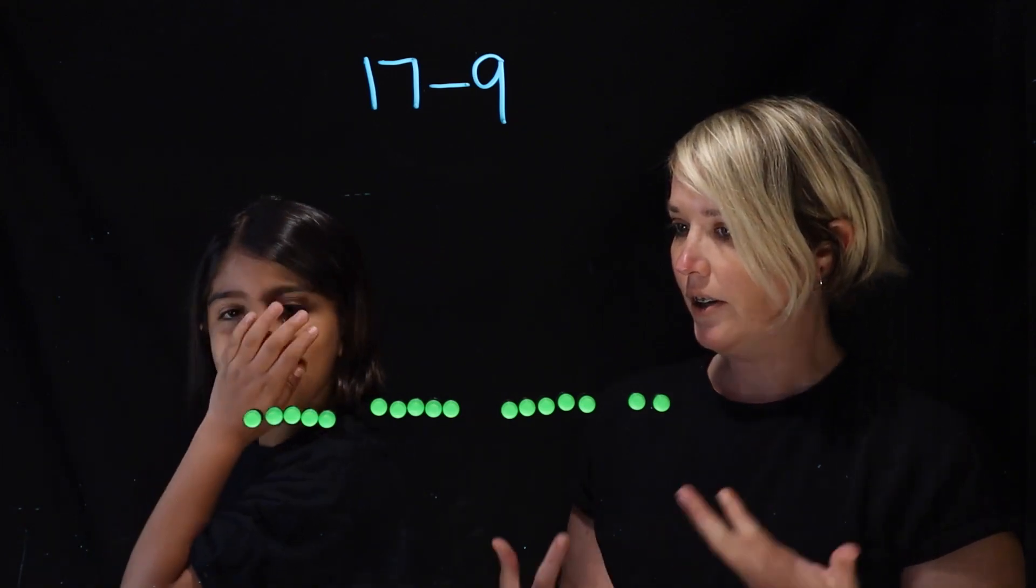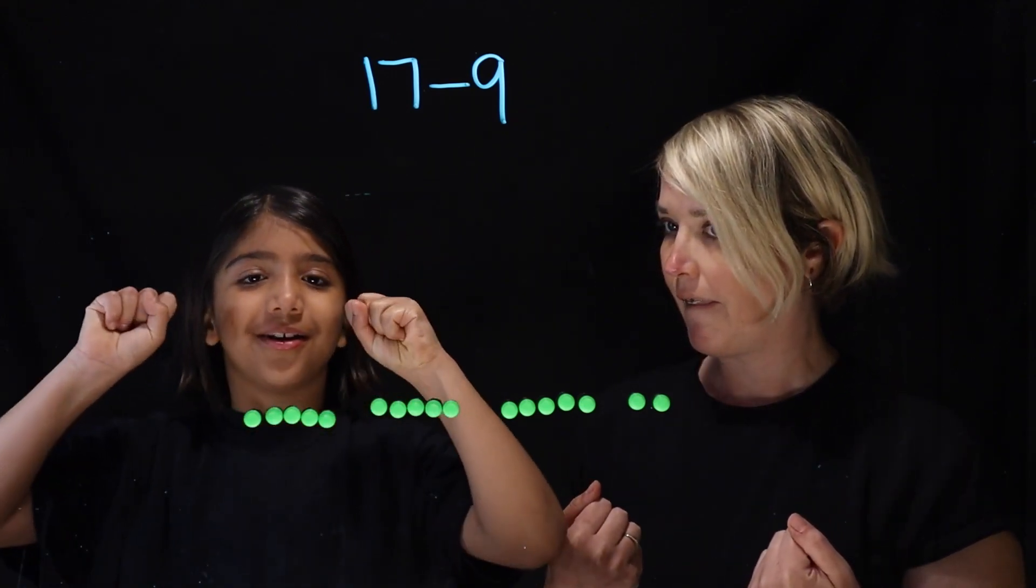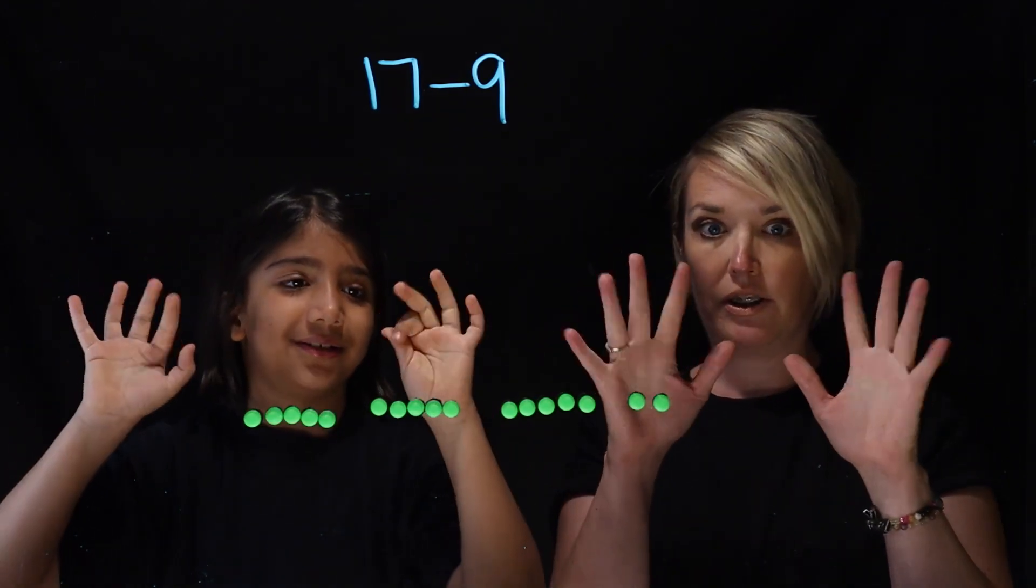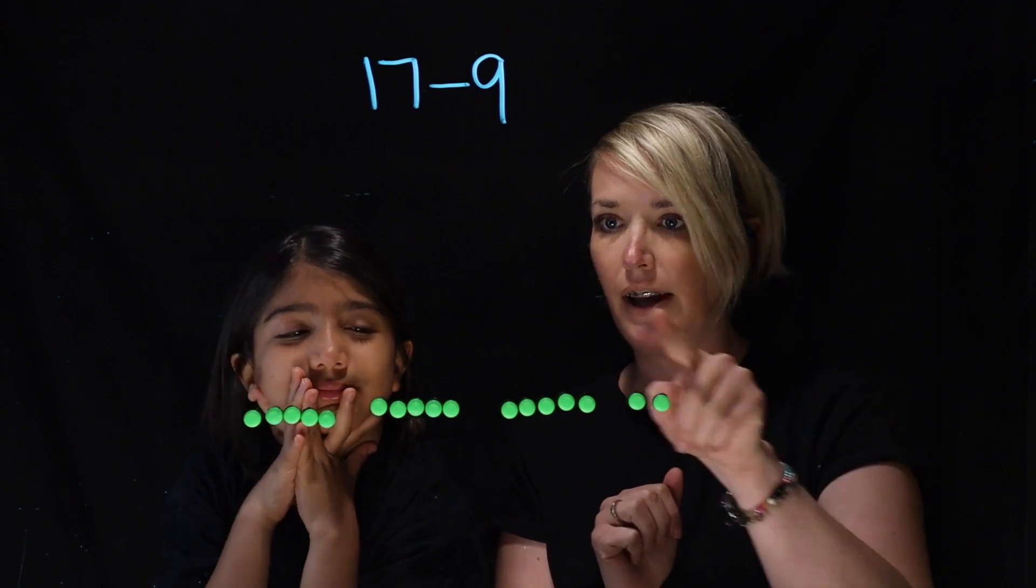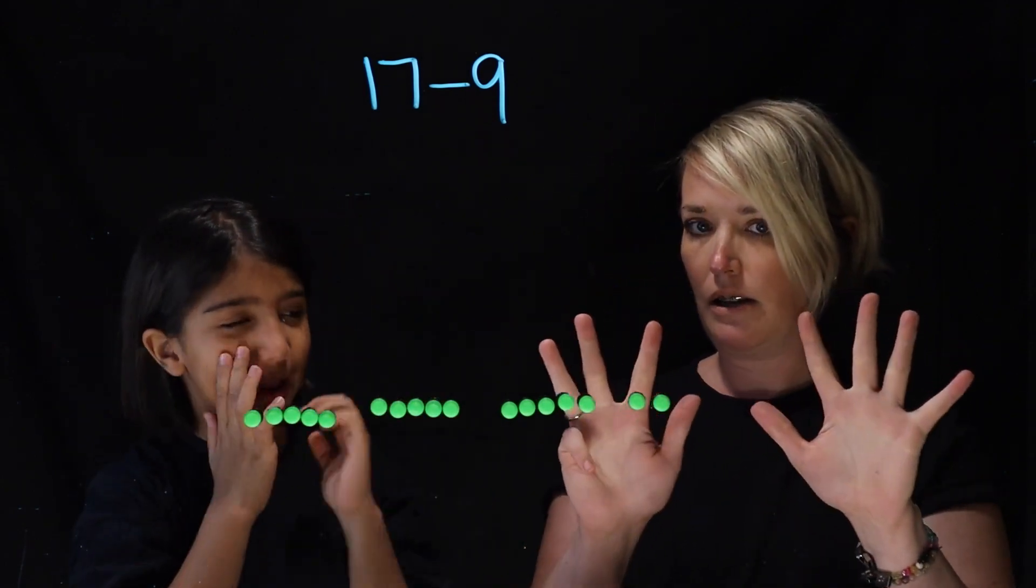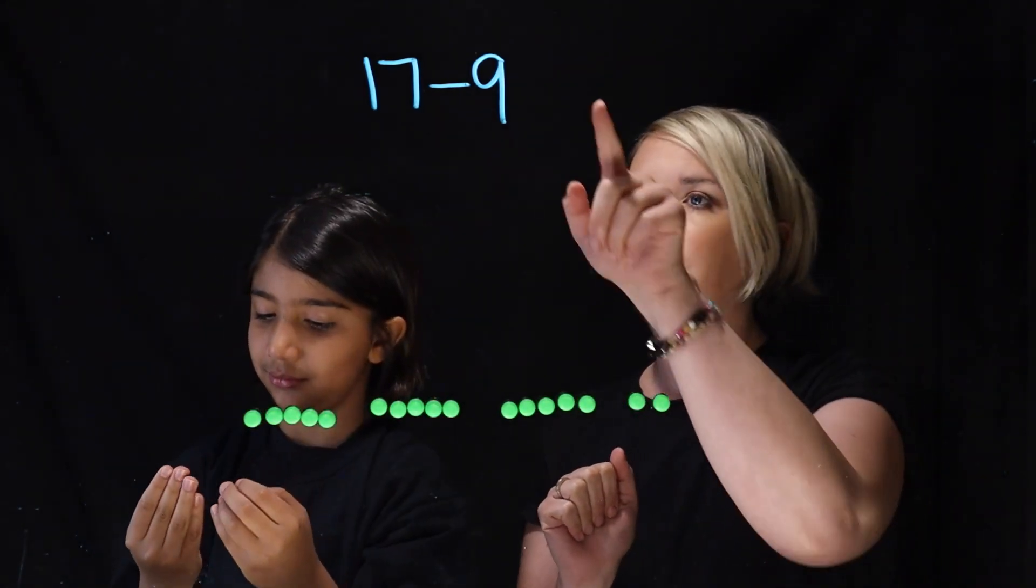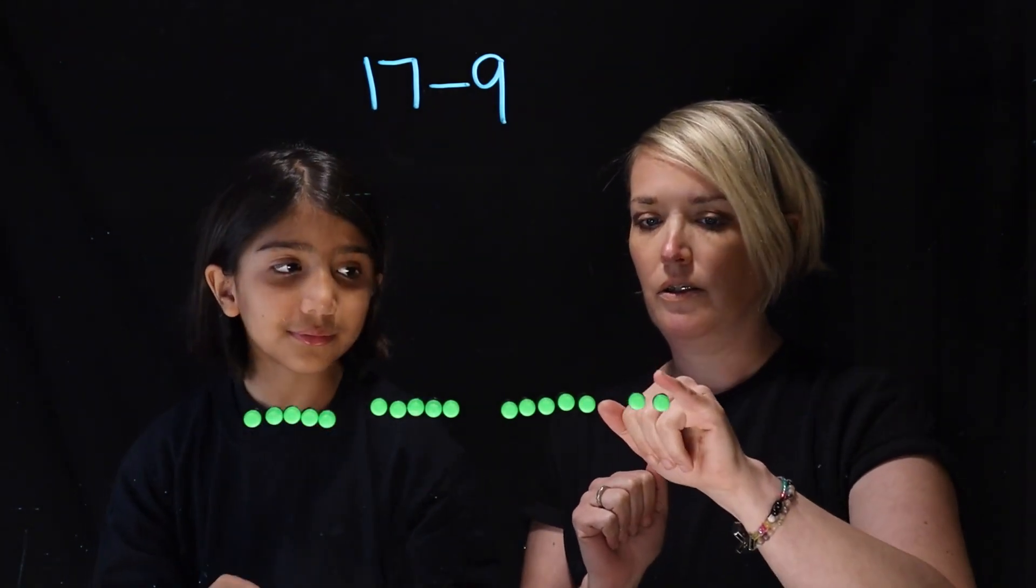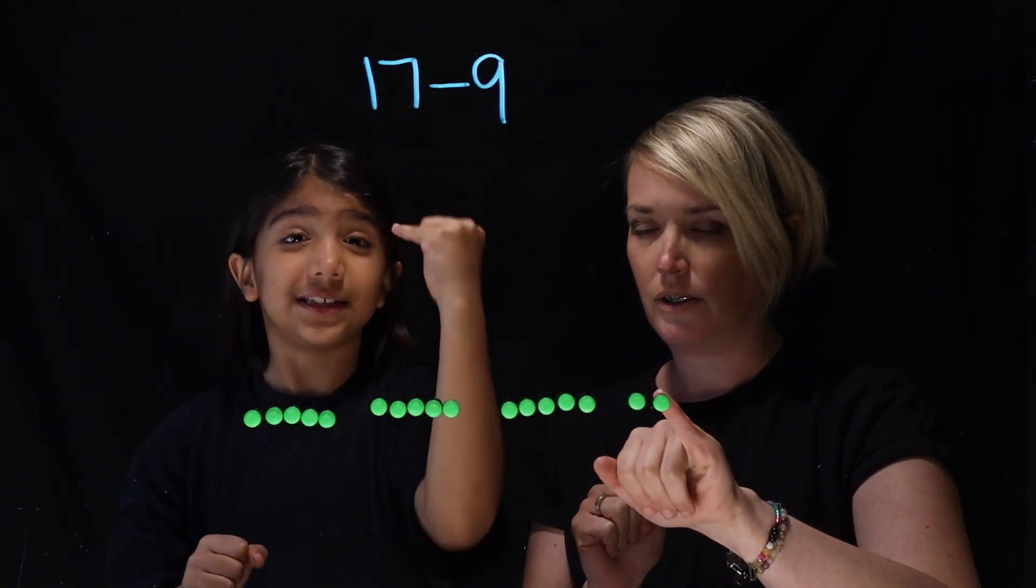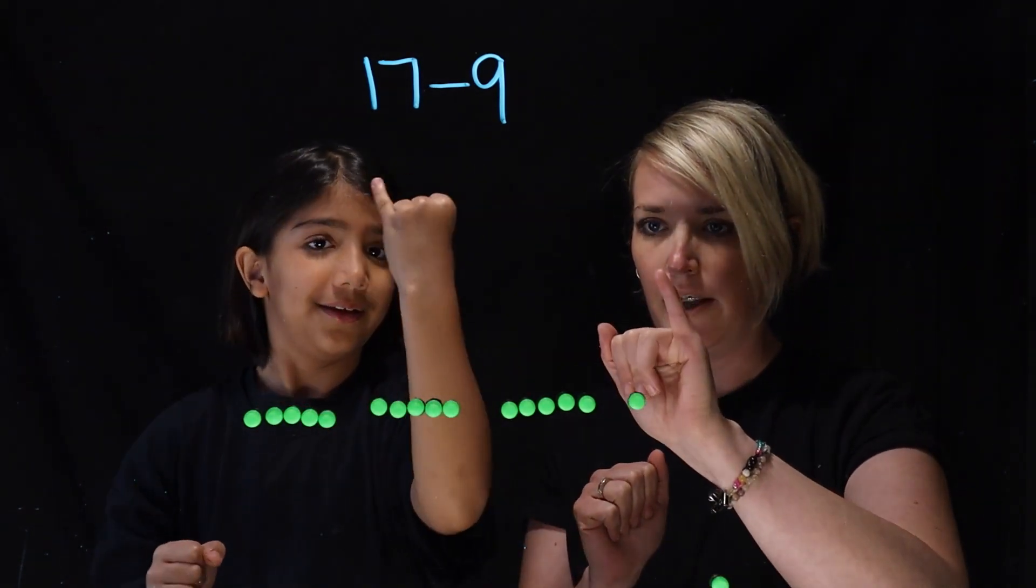17 minus 9. How are you going to do it? Count, make 9 on my fingers. So you're going to use your fingers, and you're going to make 9 on your fingers. So you're going to put 17 in your head, and then we're going to make 9 on our fingers. Okay, so we're going to put 17 in our head, and then 16. Okay, so that's one finger.